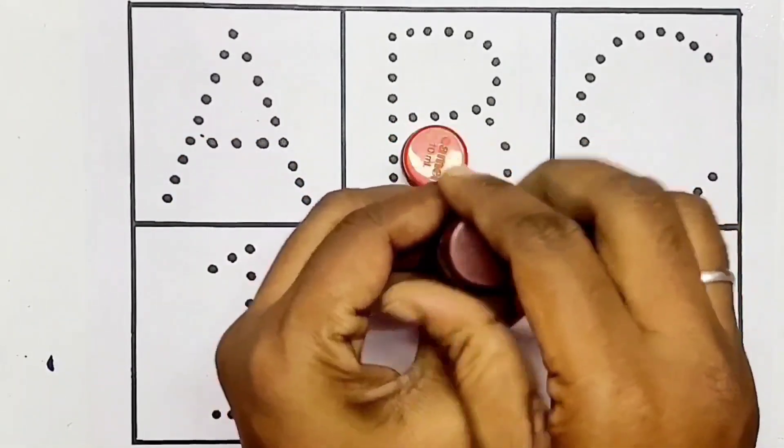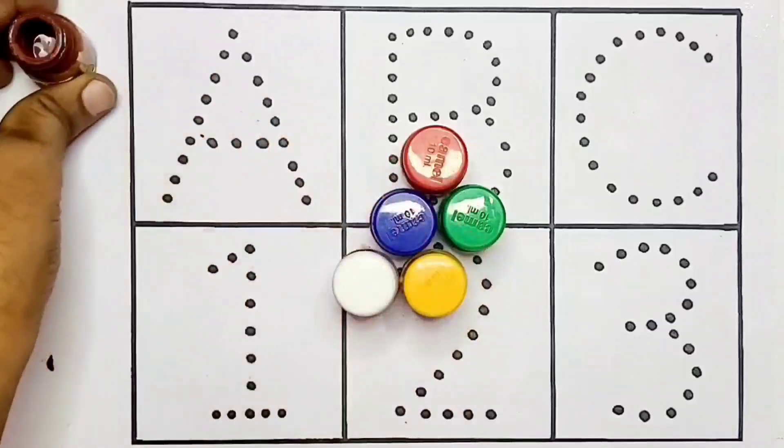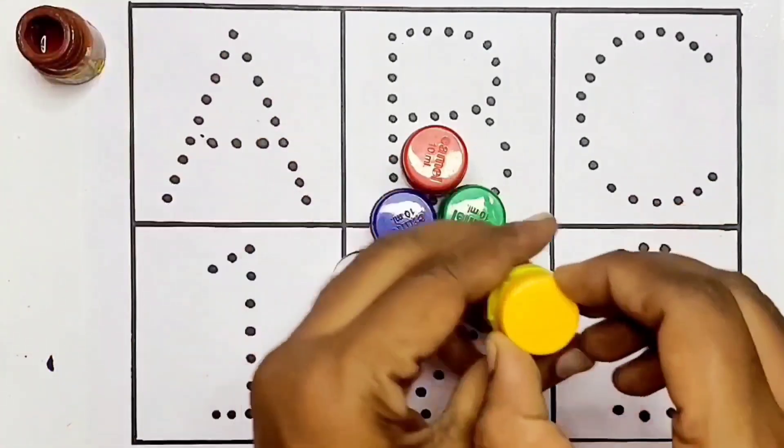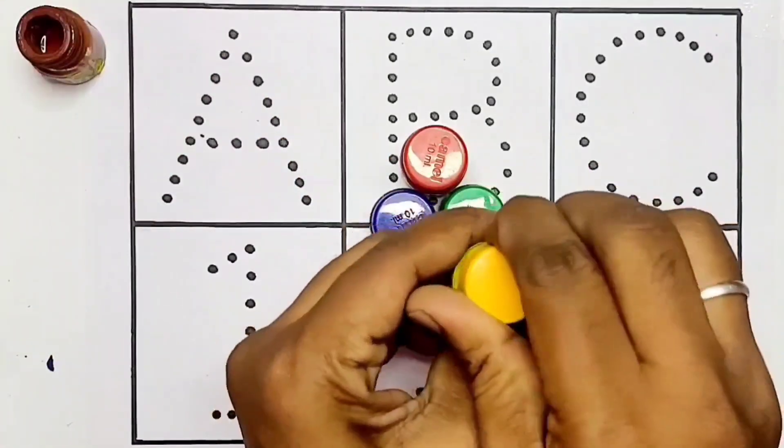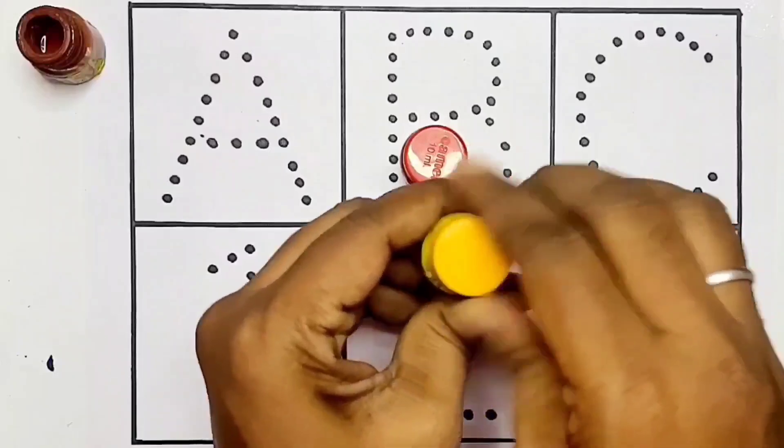This is brown color. This is brown. This one is yellow. Yellow color kids.